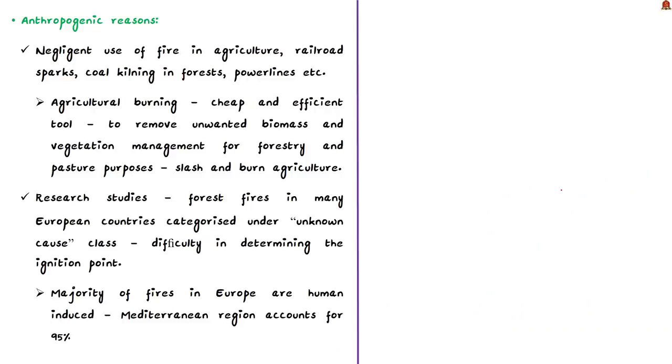Anthropogenic reasons include negligent use of fire in agriculture, railroad sparks, coal killing in forests, power lines etc. These may happen accidentally. In some cultivation, farmers carry out agricultural burning to remove unwanted biomass for vegetation management. For example, slash and burn agriculture or zone cultivation. Fire is used to burn unwanted biomass but if not carried out in controlled environment it spreads and leads to forest fires. Agricultural burning is mainly done because it is cheap and efficient.